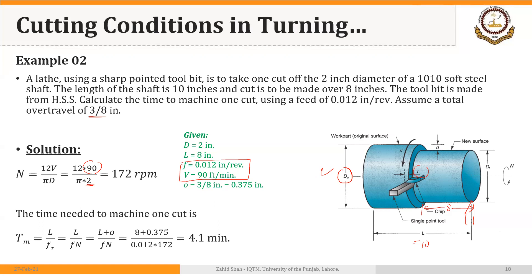The time to machine one cut equals the length of cut plus total over travel, divided by the feed rate. Length of cut is 8 inches plus 0.375 inches over travel, and feed rate equals feed (0.012) multiplied by RPM (172). This gives a minimum machining time of approximately 4.1 minutes. If a different RPM were set — say 160 — the time would increase accordingly.